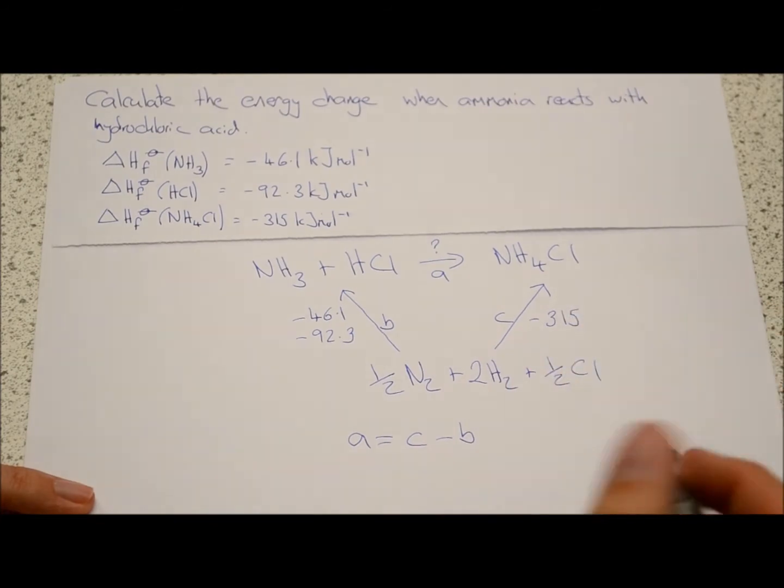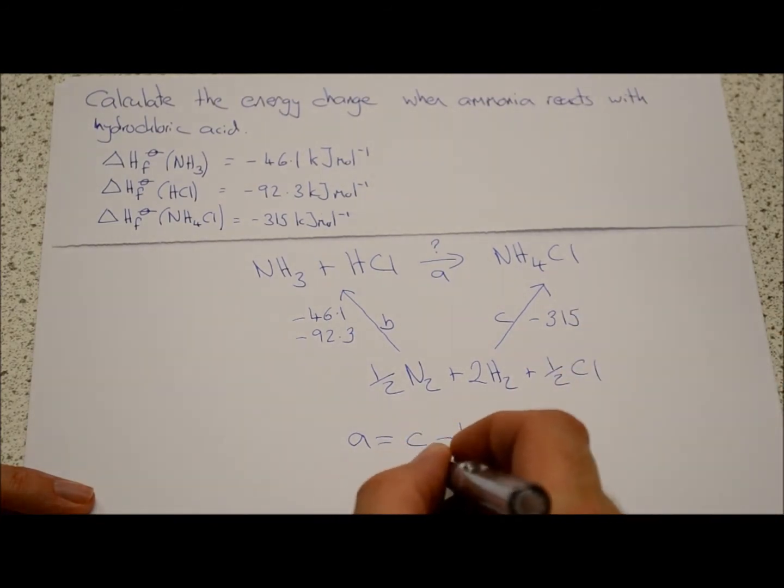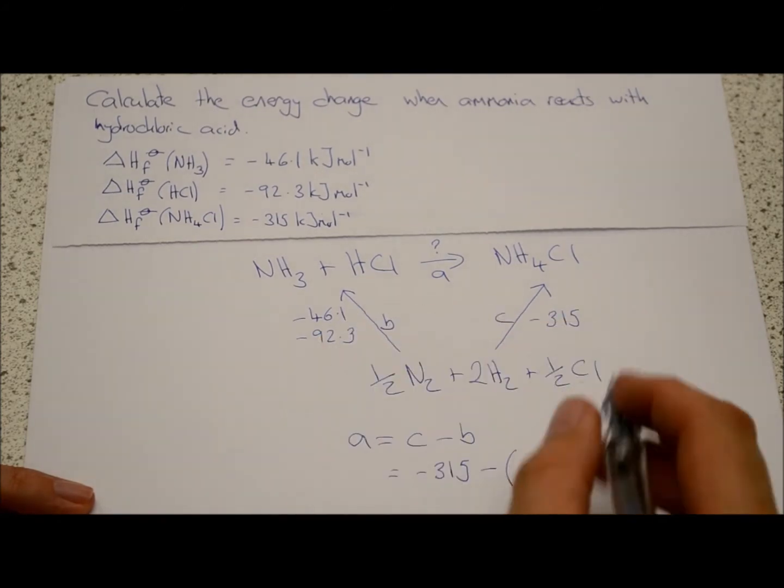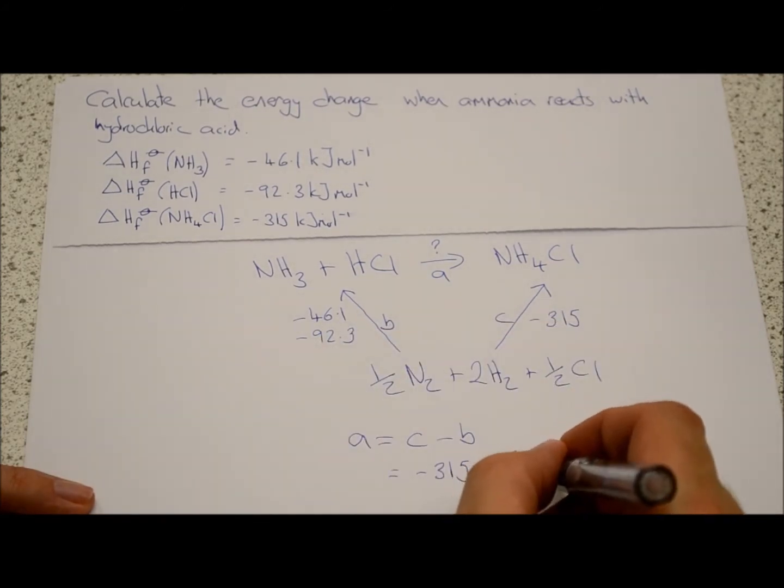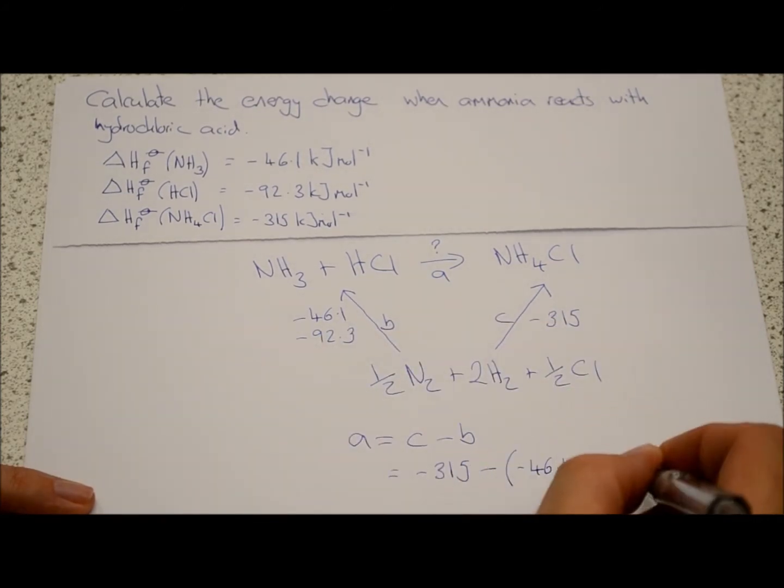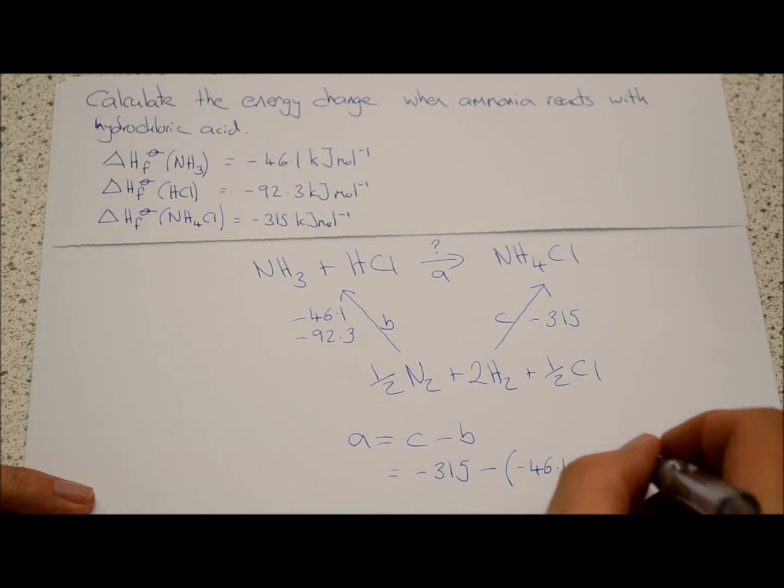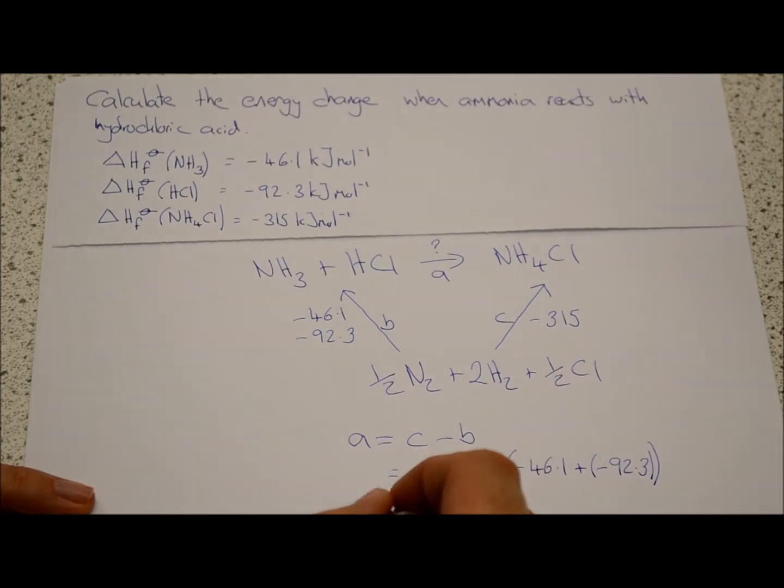So if we start putting these numbers into a calculator, C comes out as minus three hundred and fifteen. So it equals minus three one five. Now we're going to take away B, so be careful with signs on your calculator. Now because B is minus forty-six point one, we can add to that minus ninety-two point three. And if you put that in your calculator, A comes out as minus one hundred and seventy-six point six kilojoules per mole.